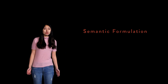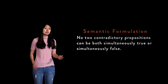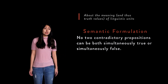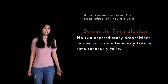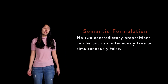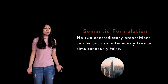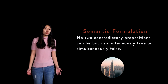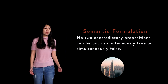Then there is the semantic formulation: no two contradictory propositions can be both simultaneously true or simultaneously false. Semantics refers to a field of linguistics, and oftentimes philosophy as well, that examines the meaning of linguistic units, which is often closely tied to the truth conditions of that unit. Take for example the propositions 'New York is a city' and 'New York is not a city.' According to the semantic principle of non-contradiction, one of these must be true and the other must be false. It cannot both be the case that New York is a city and that New York is not a city; likewise, it cannot both be false that New York is a city and that New York is not a city.